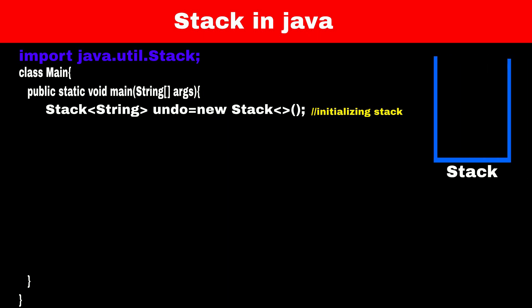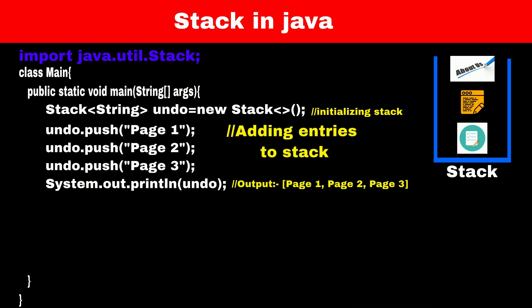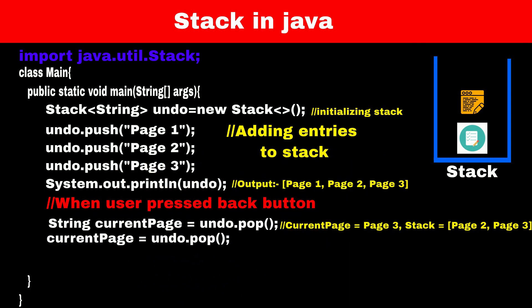Suppose we are navigating from page 1 to page 2, page 2 to page 3, and page 3 to page 4, so we will add page 1, page 2, and page 3 into our undo stack. The push method is used to add entries into the stack, and the pop method is used to remove the last added entry from the stack. If the user presses the back button on page 4, we remove and display the top element from the stack, which is page 3.